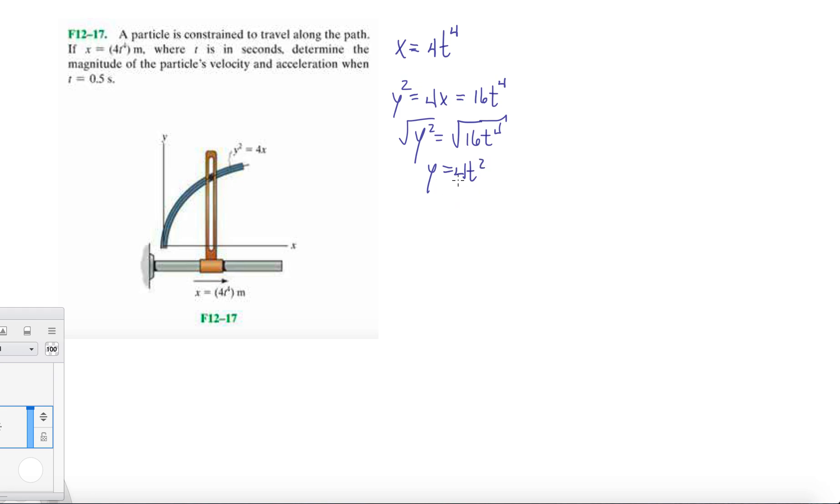Now we have x and y and now let's calculate their velocities. So take one time derivative for the x, that's 16t cubed. Do the same thing for the y, one time derivative that gives you 8t.